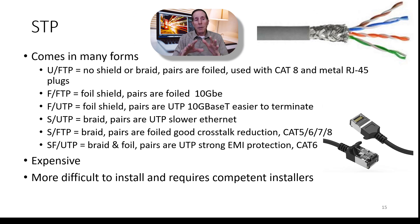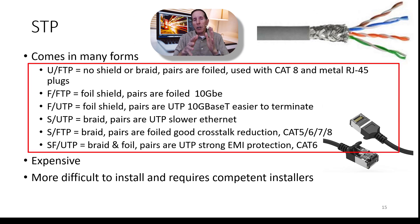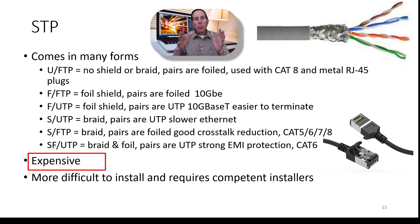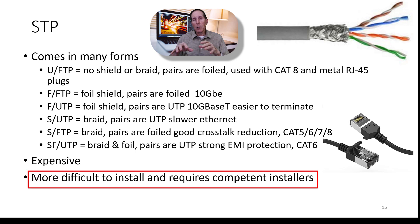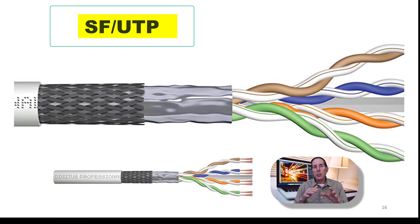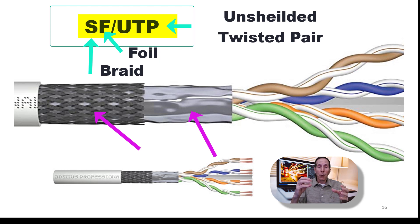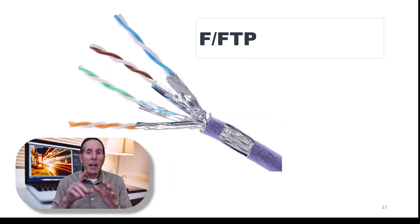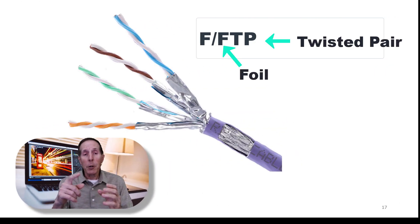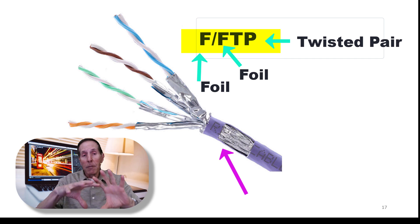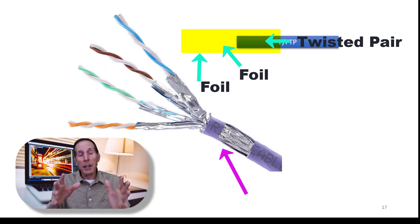Shielded twisted pair comes in six variations as shown on this slide. They're more expensive to purchase and more difficult to install, requiring a competent group of installers. This is SF/UTP — the pairs are unshielded, but we have foil and braid. Braid gives you the greatest amount of strength; the foil gives you high rejection from EMI and RFI. The F/FTP version gives you foil around each pair for extremely high crosstalk rejection, plus foil around all four pairs for great RFI and EMI rejection.